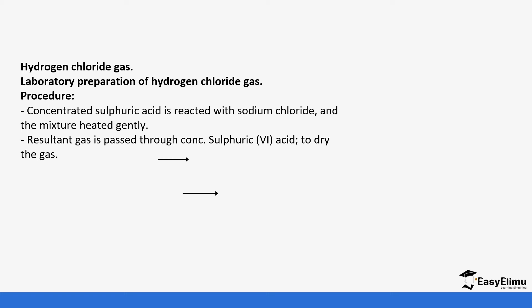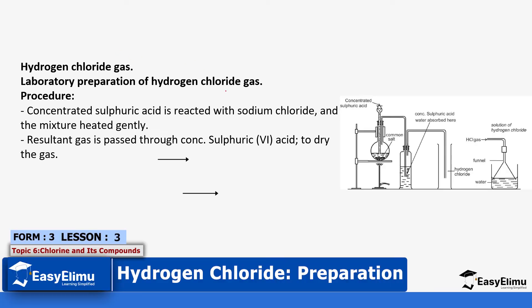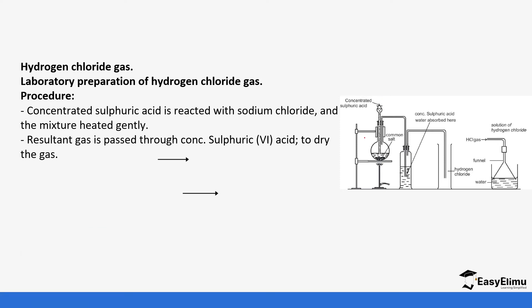The salt we use is mainly sodium chloride, and we heat the mixture. As you can see in the diagram, we have concentrated sulfuric acid being poured into the dropping funnel, and in the round-bottomed flask we have the common salt, which is sodium chloride. The reaction occurs and the gas is passed through concentrated sulfuric acid, which acts in two ways — it absorbs any water.